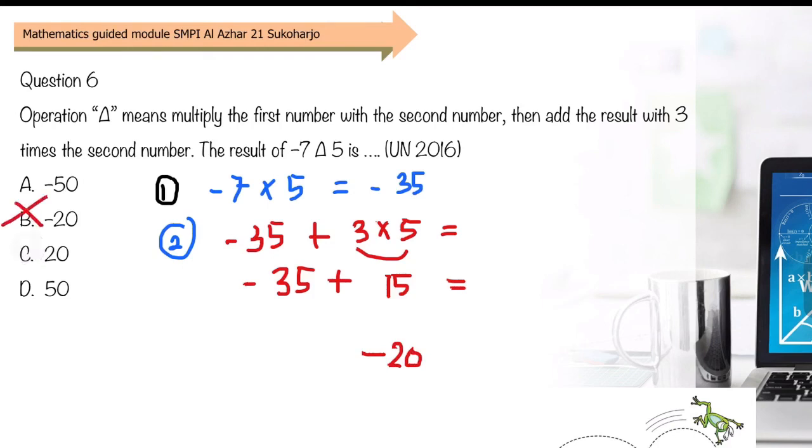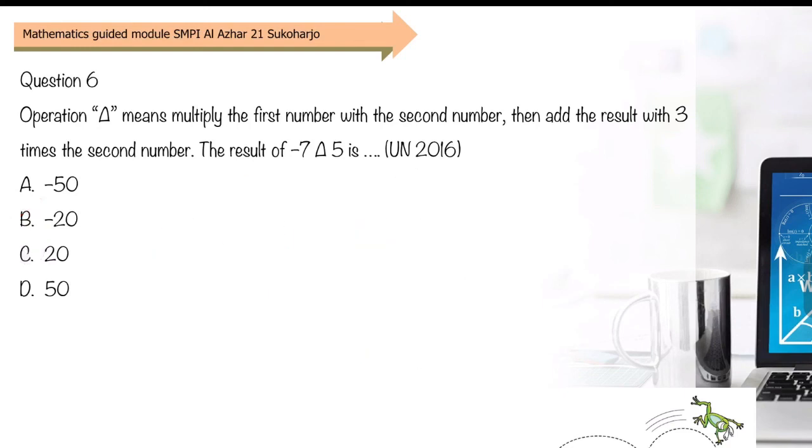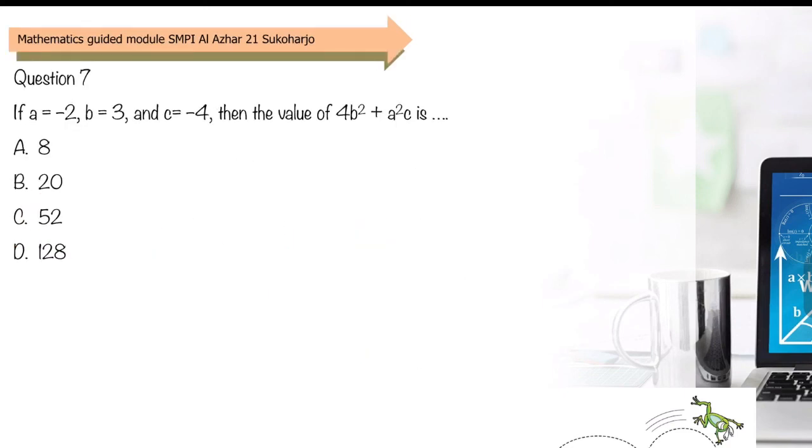Question 7: If A equals negative 2, B equals 3, and C equals negative 4, then the value of 4B² plus A²C. This introduces a bit of algebra. You need to know that this expression means 4 times B squared, which is 4 times B to the power of 2, plus A squared C, which means A squared multiplied by C. In algebra, multiplication doesn't need the times sign.